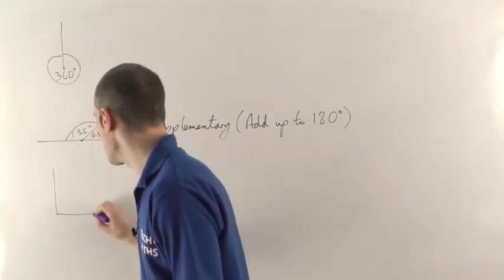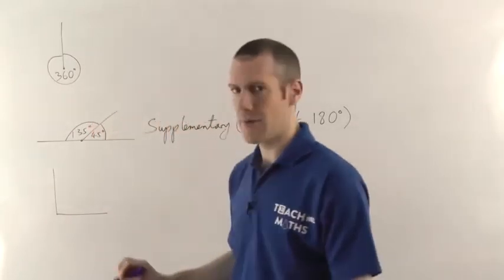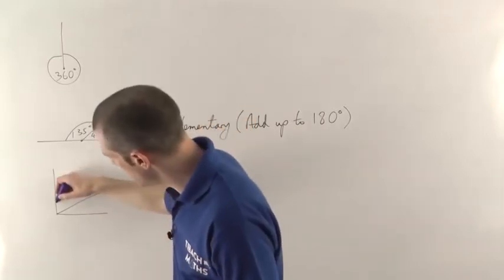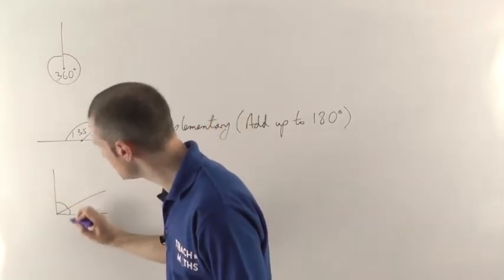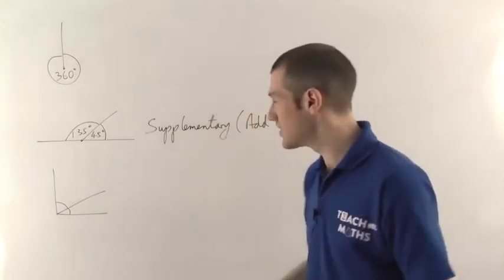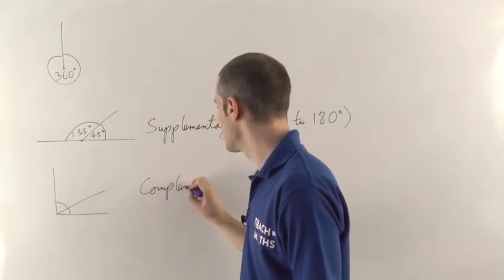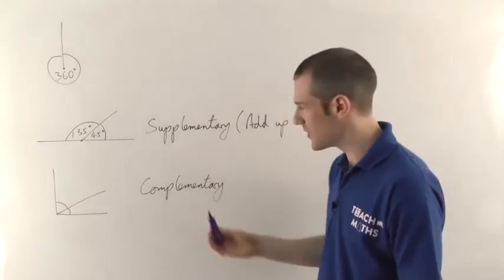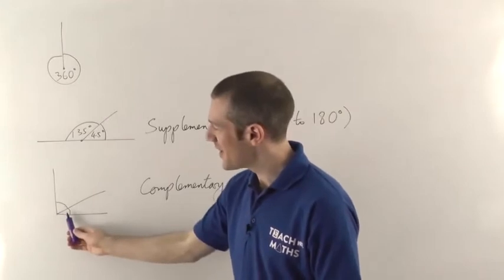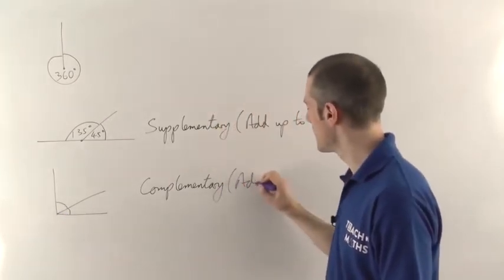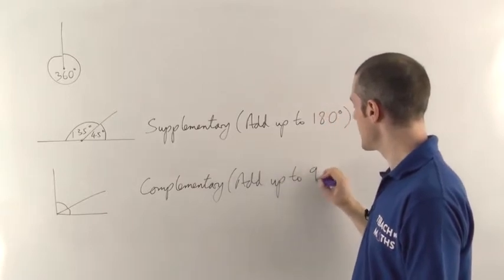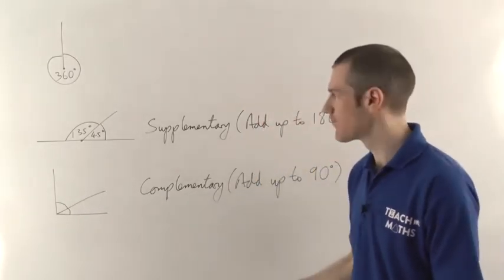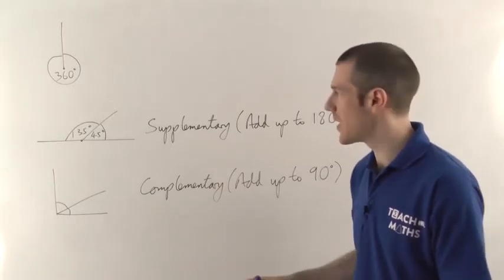Next, if you have a right angle and split it in two, so you've got one angle and another angle — two angles which add up to 90 degrees — then we say that they are complementary. This is complementary, not complimentary. You're not saying how nice the hair looks; you're saying that these two angles add up to 90 degrees. In any situation, any two angles that add up to 90 degrees are complementary. So those are some important definitions you should be aware of — we're going to be using those quite a bit.